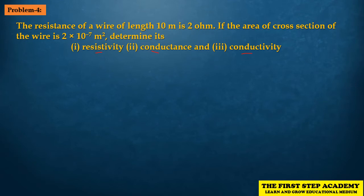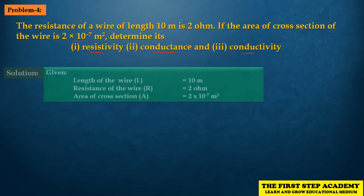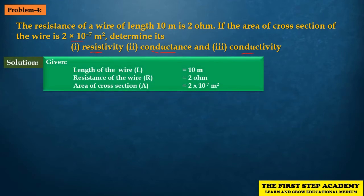Given values: length of the wire L = 10 metres, resistance of the wire R = 2 Ohm, and area of cross-section A = 2×10⁻⁷ metre square. We have three formulas to recall — one each for resistivity, conductance, and conductivity.